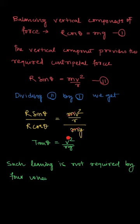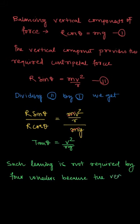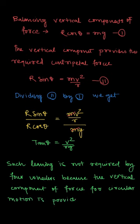If we substitute the velocity at which we want to move along the circular road, where r is the radius of curvature and g is acceleration due to gravity, the lean angle θ is given by tan θ = v²/rg. In the case of two-wheelers, this leaning is required. But for four-wheelers, such leaning is not required because the horizontal centripetal force is provided by friction between the road and tires.